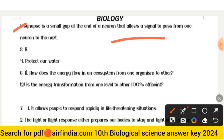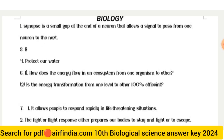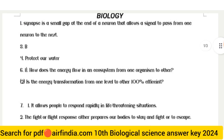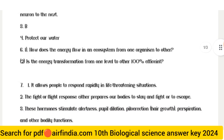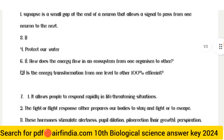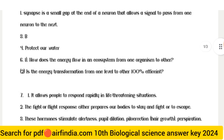The answer to question one — What is synapse? — A synapse is a small gap at the end of a neuron that allows a signal to pass from one neuron to the next.